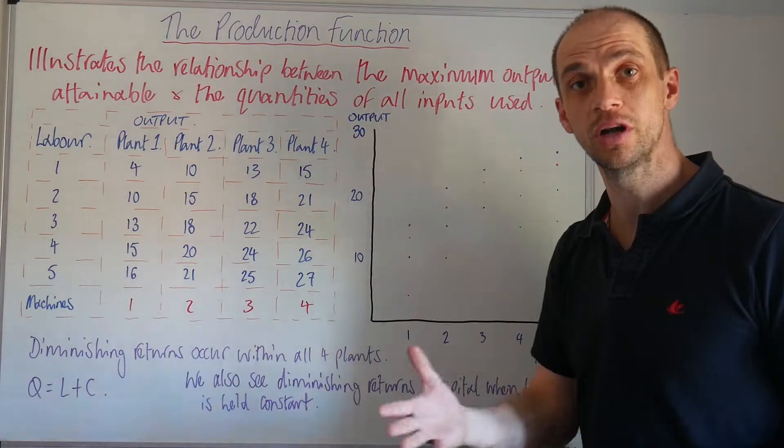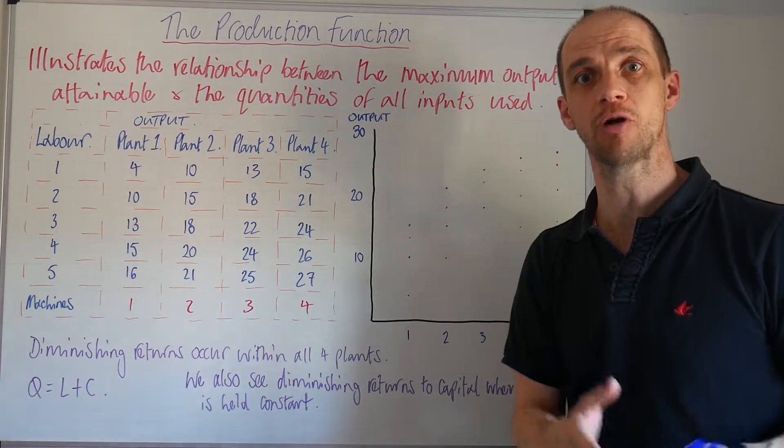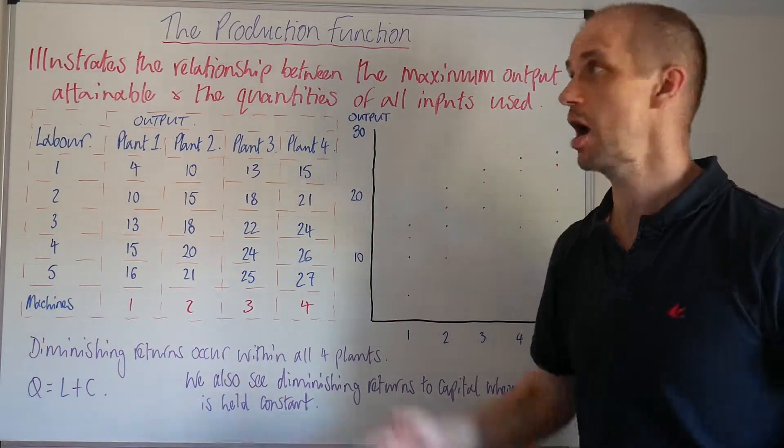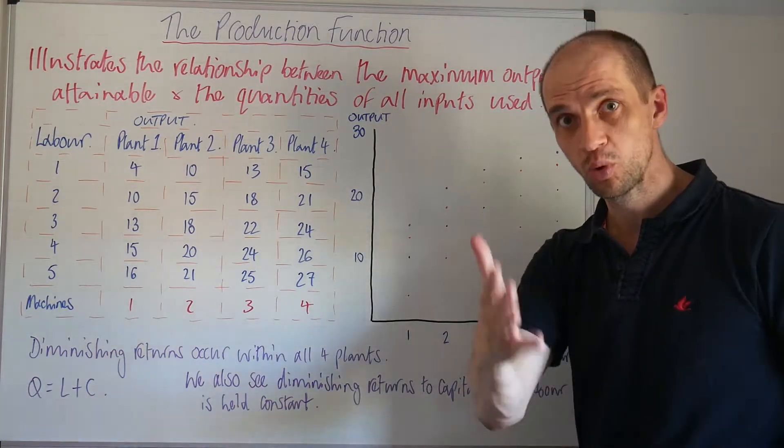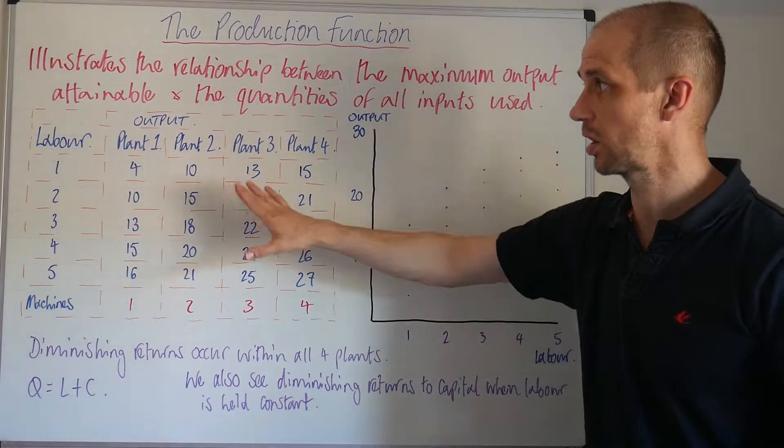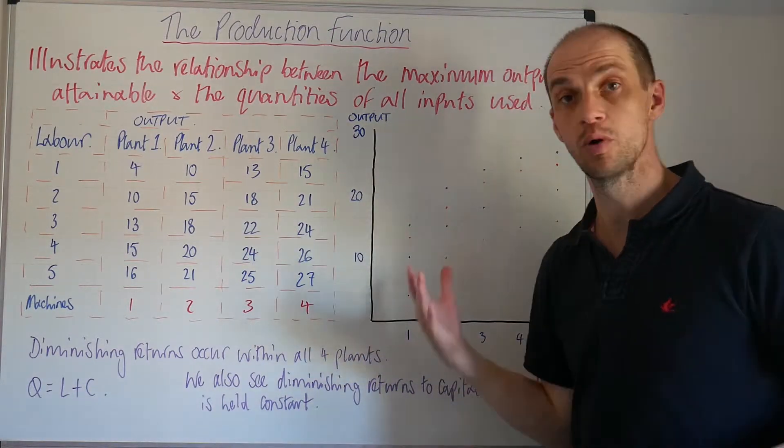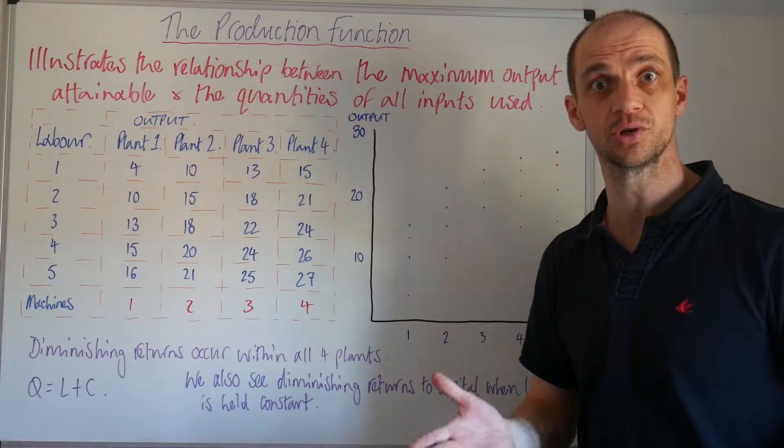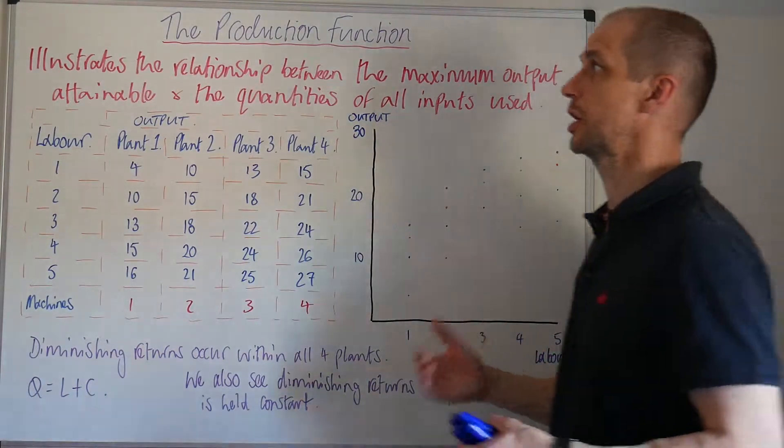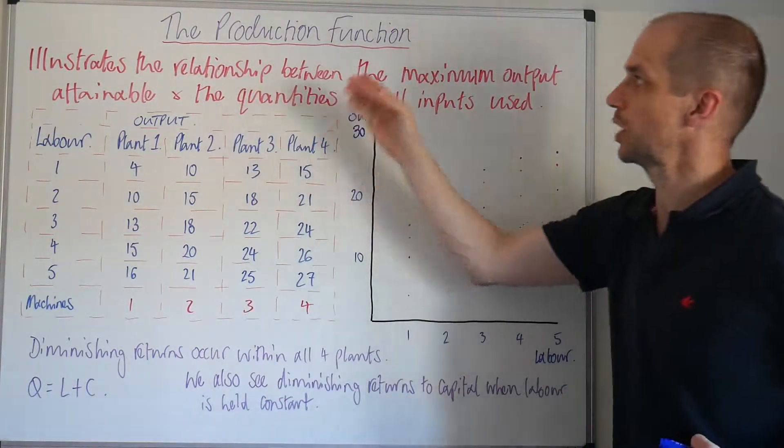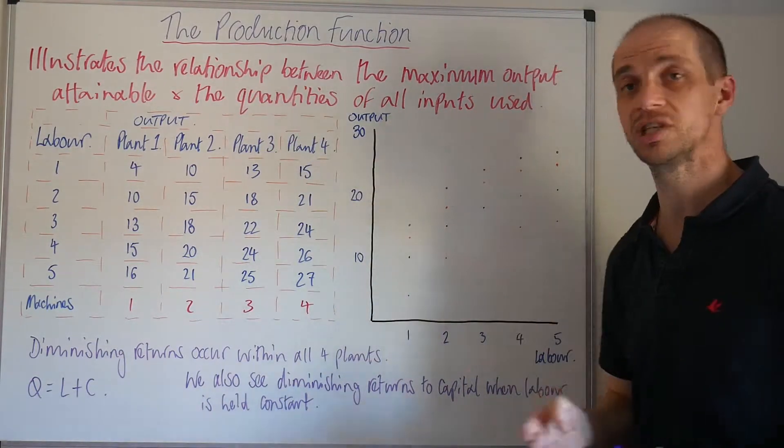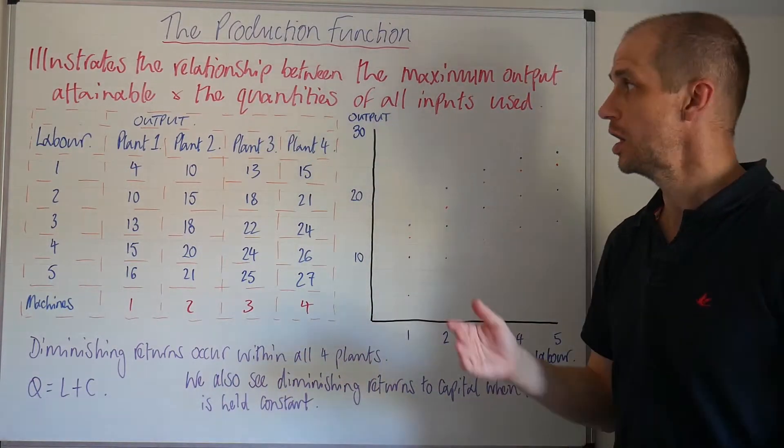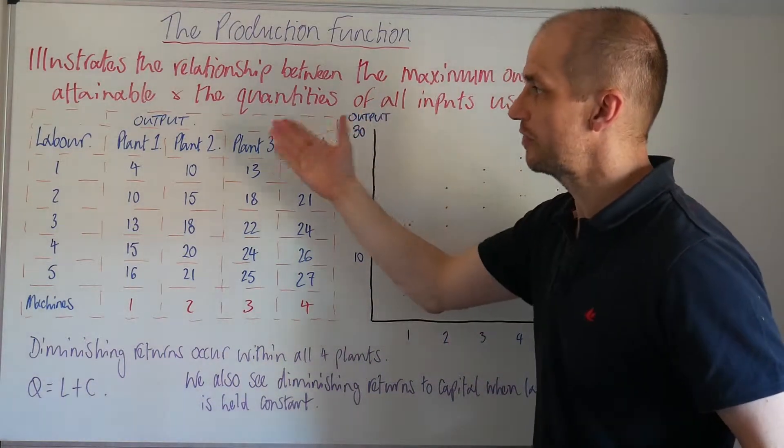Now the production function is really about the generation of output or productivity which is a function of the factor inputs, and we'll look at this relationship in this little table that I've drawn out. We'll be considering labor and capital as our factor inputs here. So it illustrates the relationship between the maximum output attainable and the quantities of all inputs used. So let's take a look at what we've got here.